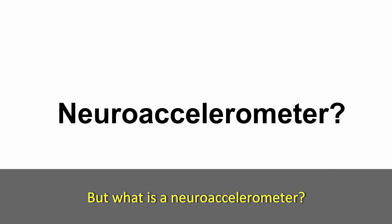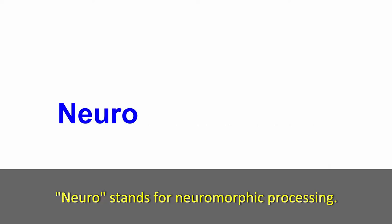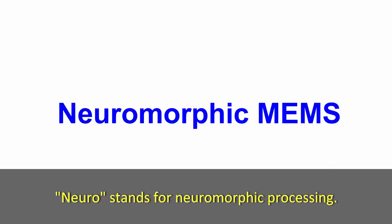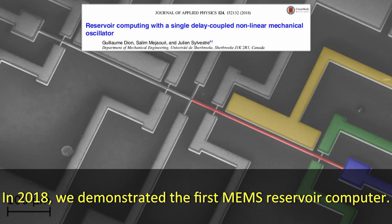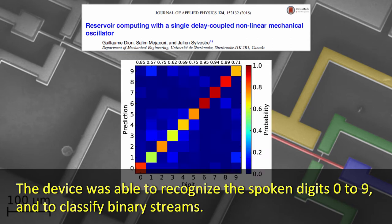But what is a neuroaccelerometer? Neuro stands for neuromorphic processing. In 2018, we demonstrated the first MEMS reservoir computer. The device was able to recognize spoken digits from 0 to 9 and to classify binary streams.